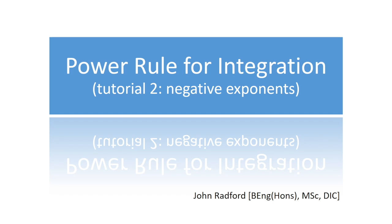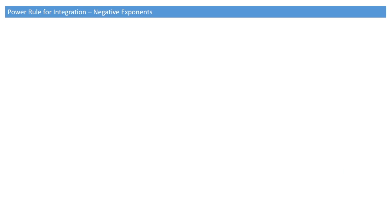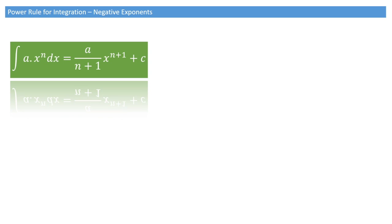In this video, we learn more about the power rule for integration, and in particular, we learn how to deal with powers of x on the denominator. Remember, the power rule for integration states the following: the integral of a times x to the power of n is equal to a over n plus 1 times x to the power of n plus 1, plus c.